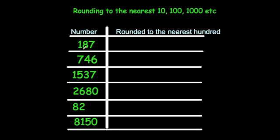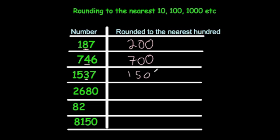Let's look at some questions. 187: the number in the tens column is an 8, so we round up to 200. 746: the number in the tens column is a 4, so we round down to 700. 1537: we have thousands, hundreds, tens, and units — the tens column has a 3, so we round down to 1500.